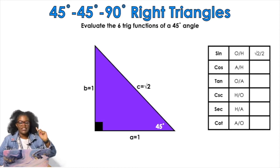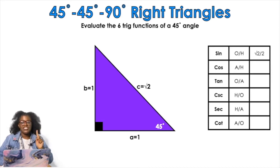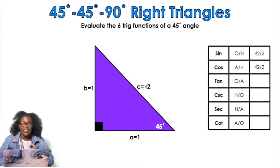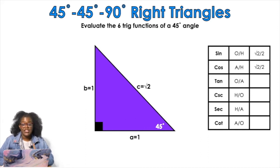Cosine is adjacent over hypotenuse. Looking at the 45-degree angle, we have a 1 right next to it — adjacent — over the hypotenuse, square root of two. Rationalized, that's root two over two. It's the same as sine because the angles are equal — that's why it's isosceles. For tangent, opposite over adjacent is 1 over 1, which equals 1.